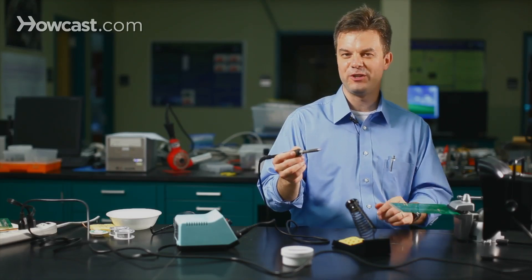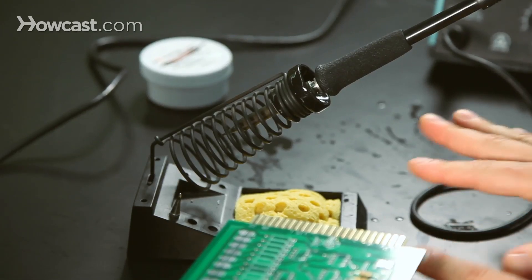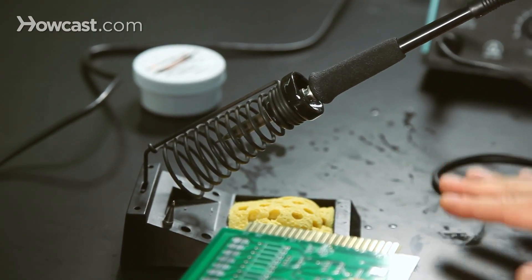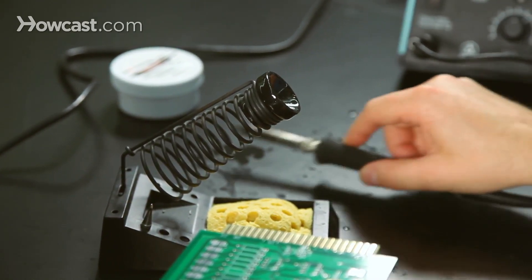Perhaps one of the more important pieces of equipment is the solder stand, which allows you to safely put the solder iron back on the stand so that you won't have any safety issues by leaving it out on the desktop where it could potentially cause a fire.